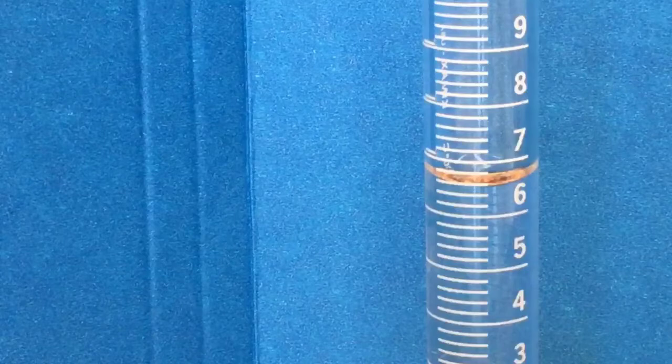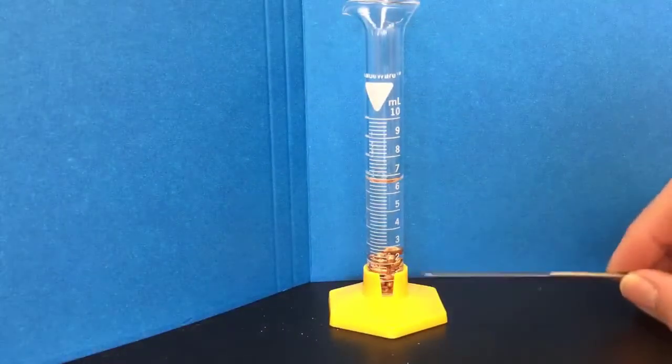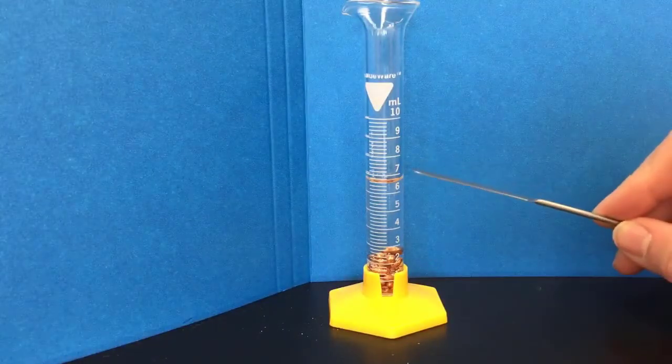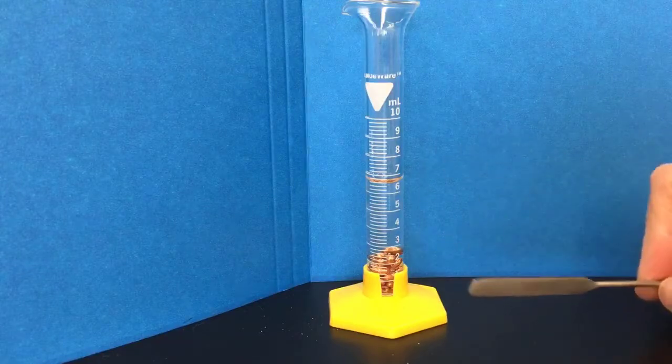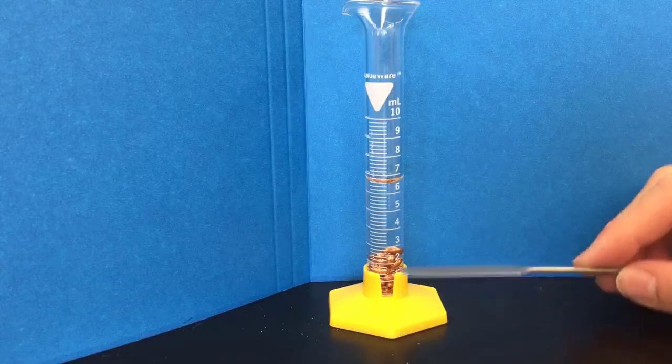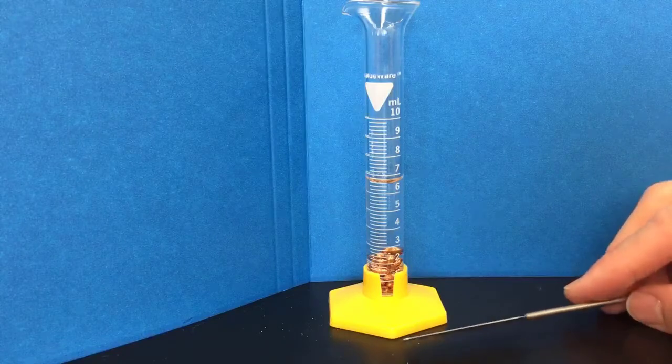That would be my new volume. To get the volume of the irregular solid, you take the volume of the water with the metal minus the volume of the original liquid alone, and you get the volume of your solid.